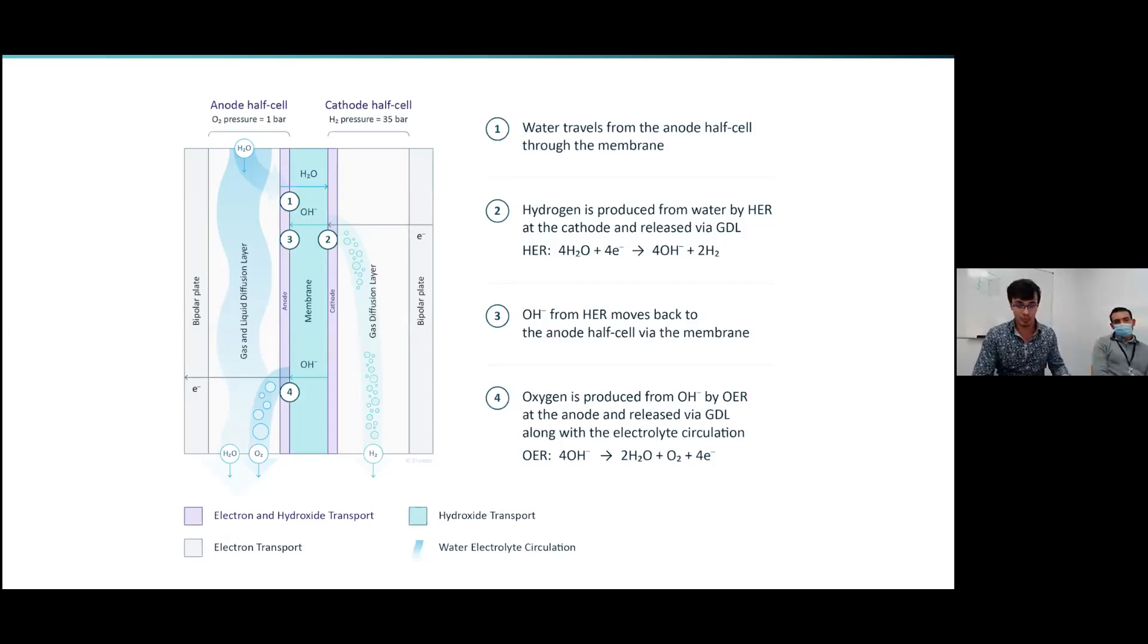The other example being PEM. Instead of the AEM in the center, it conducts protons, behaves as a strong acid, and as noted before, it requires things like gold, titanium, platinum, iridium. And so you run into the supply chain issue.